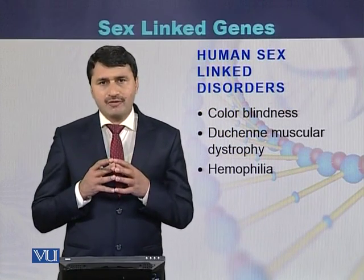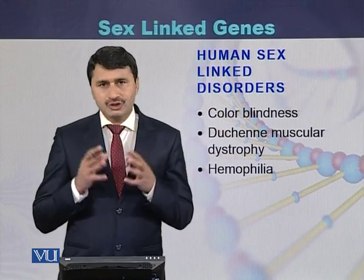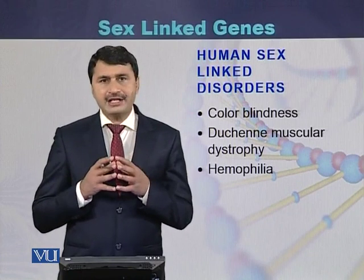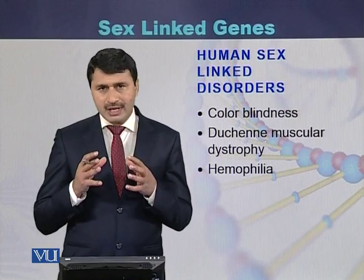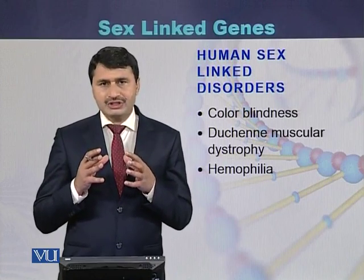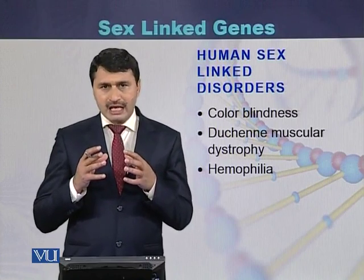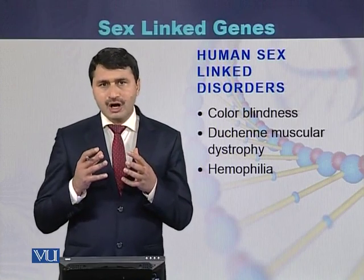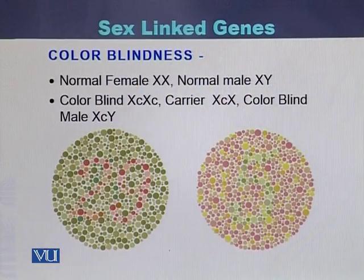The most common examples of sex linked disorders are color blindness, Duchenne muscular dystrophy, and Haemophilia. The genes of these disorders are related to the X chromosome or the sex chromosomes. In humans, color blindness is a disease which is related to the X chromosome.